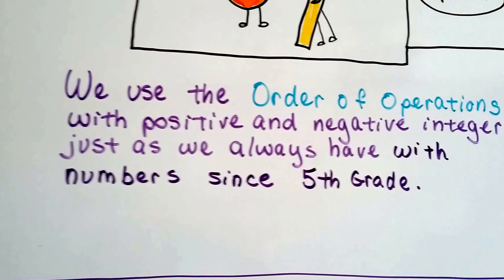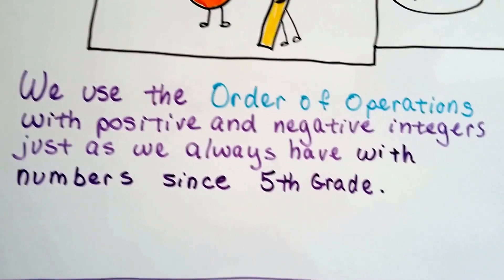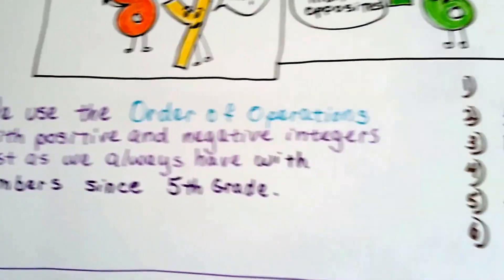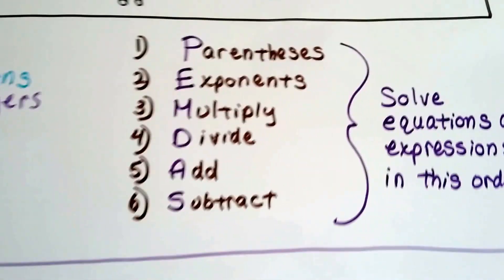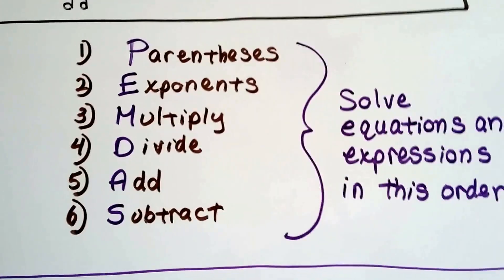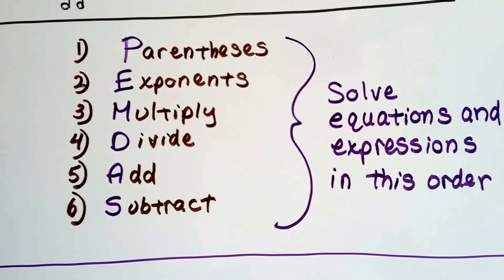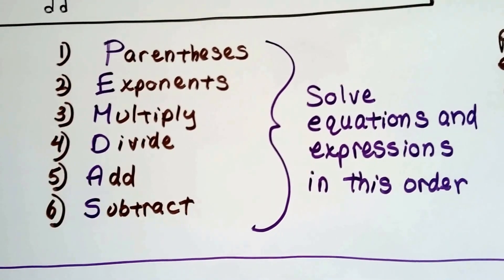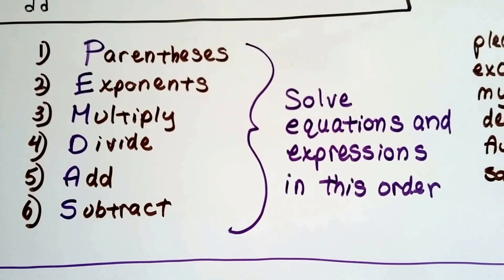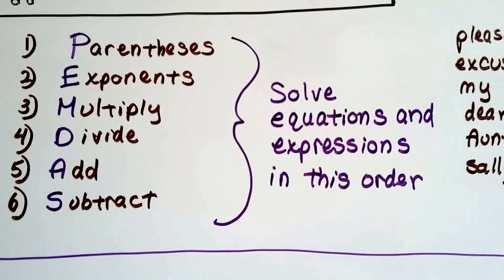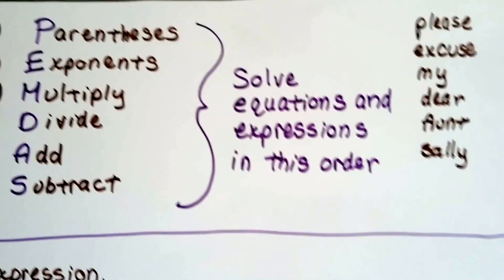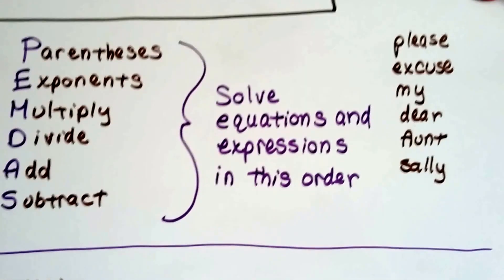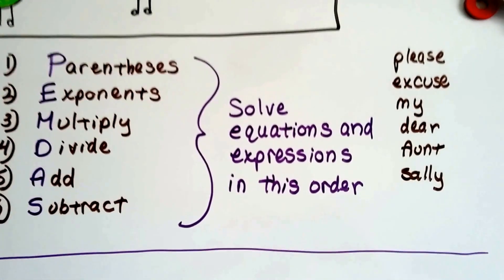We use the order of operations with positive and negative integers just as we always have with numbers since 5th grade. Remember: parentheses, exponents, multiply, divide, add, subtract. It spells PEMDAS going down. We solve equations and expressions in this order, and we can use 'Please Excuse My Dear Aunt Sally' to help us remember it, like people have for decades.